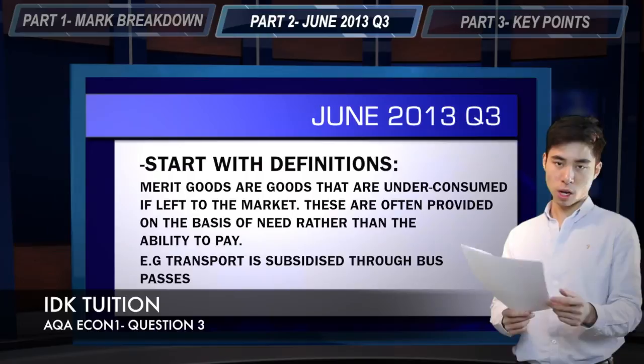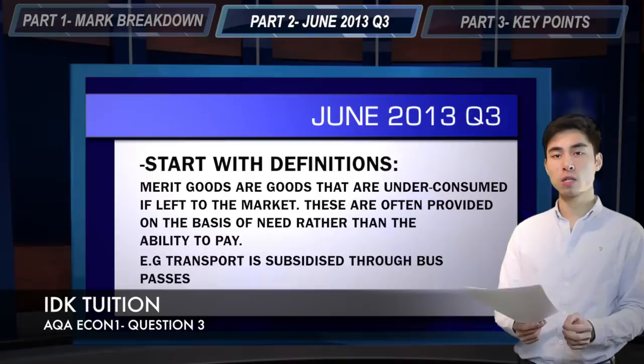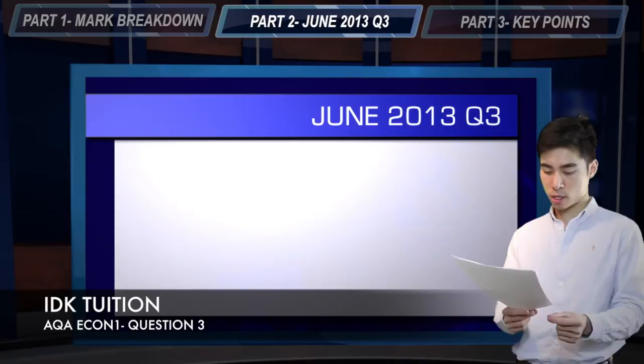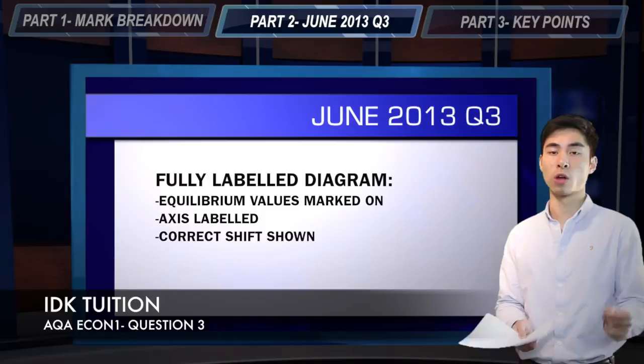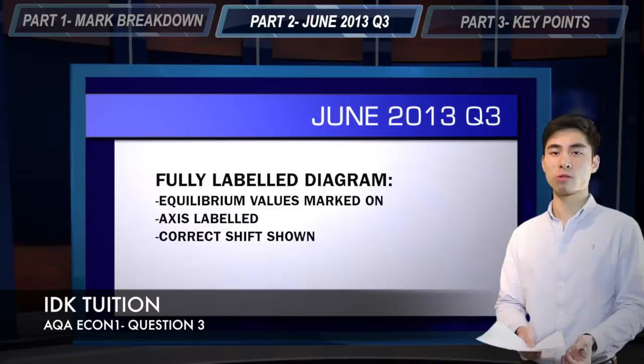Moving on — it should be relatively straightforward to pick up all four marks for definitions and examples for this question. For your diagram, make sure it is fully labelled. What I mean by this is you need to make sure your axes are labelled properly — so either P and Q, or quantity and costs and benefits, depending on the question. Make sure your equilibrium points are marked on: your P1, P, Q1 and Q — or alternatively P1, P2, Q1, Q2. That's equally valid.